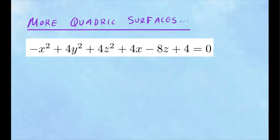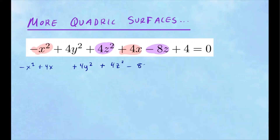We need to put this equation in standard form so we can identify what type of surface it is. I'm going to group the x terms, y terms, and z terms next to each other. For y, there's no other term other than 4y squared. But for z, I can group those two terms together. The constant term we're going to move to the other side. So we got negative x squared plus 4x — leave a space since we're going to complete the square — plus 4y squared, then for z: 4z squared minus 8z. And the plus 4 we move to the other side, so that's minus 4.